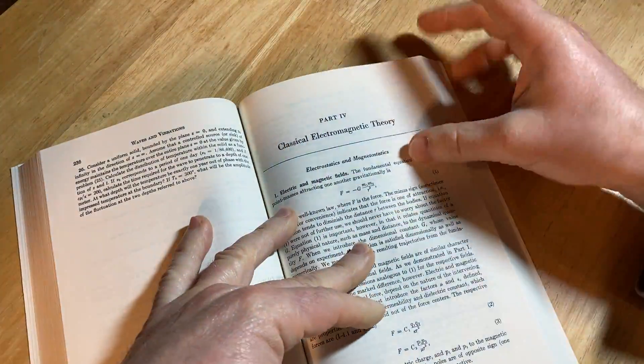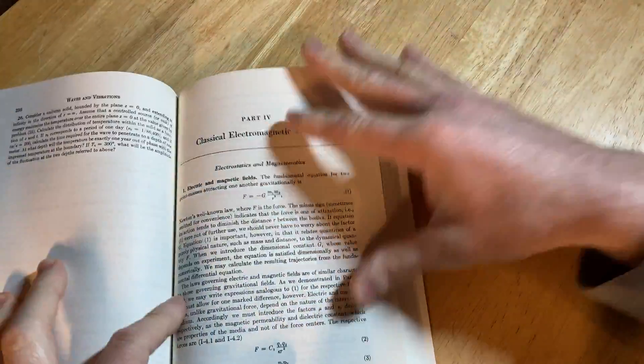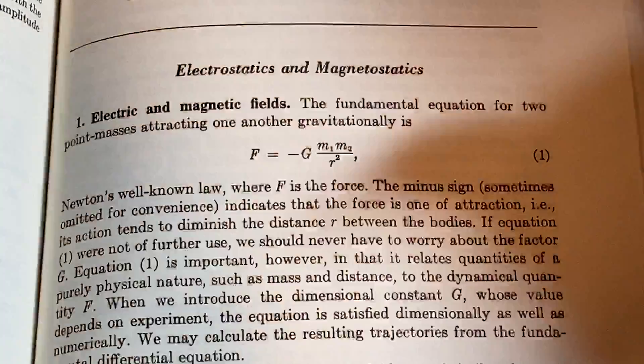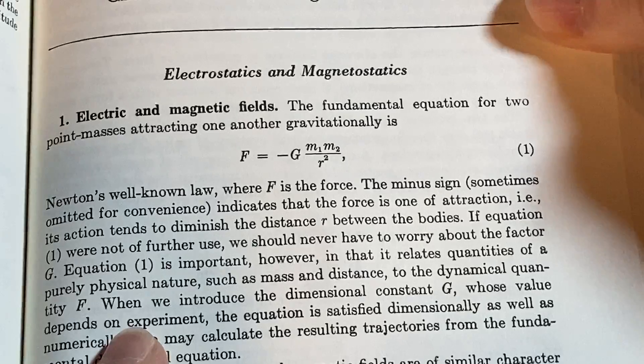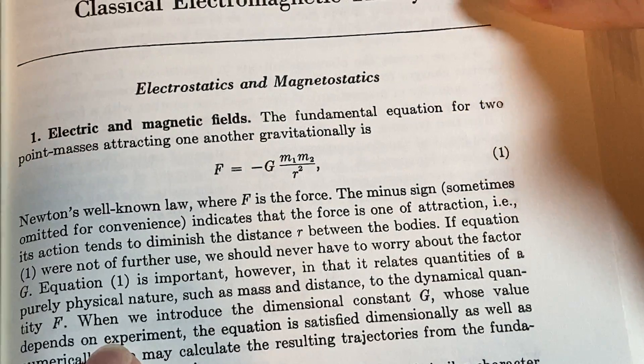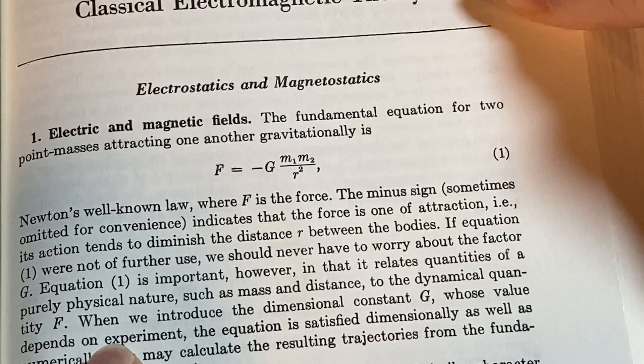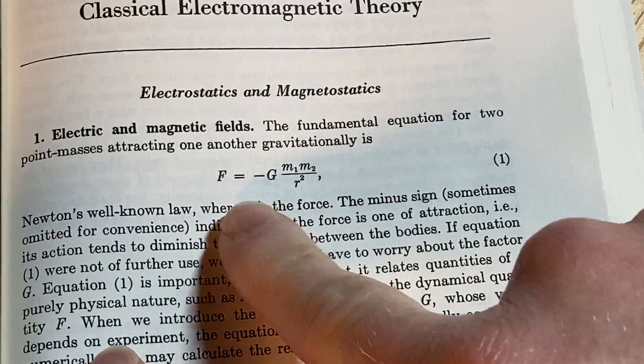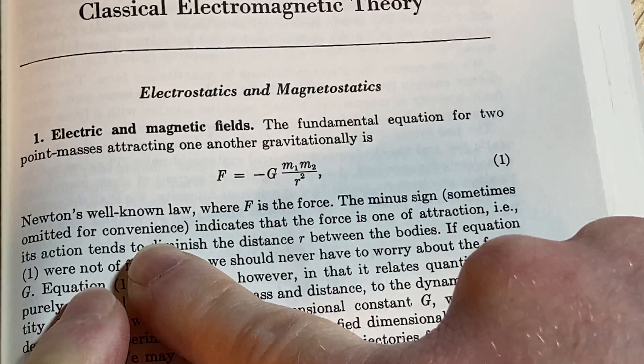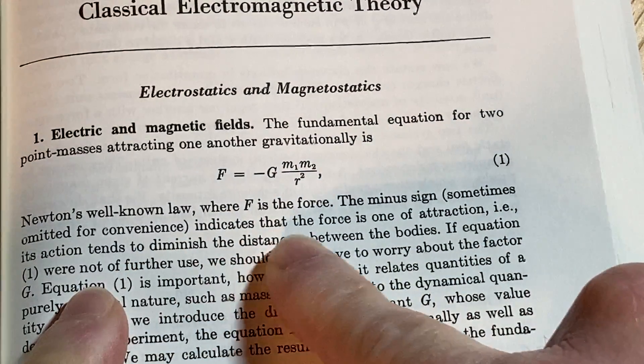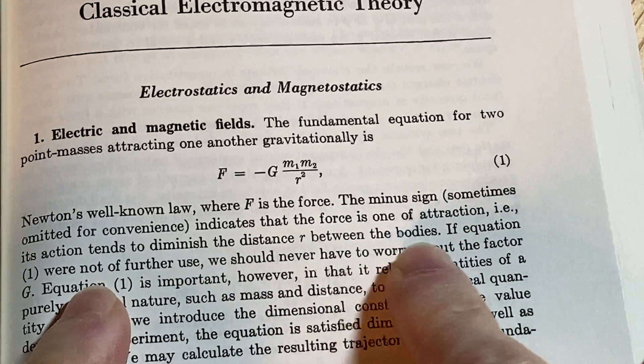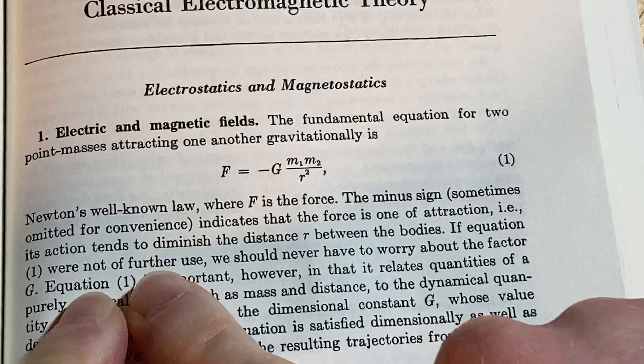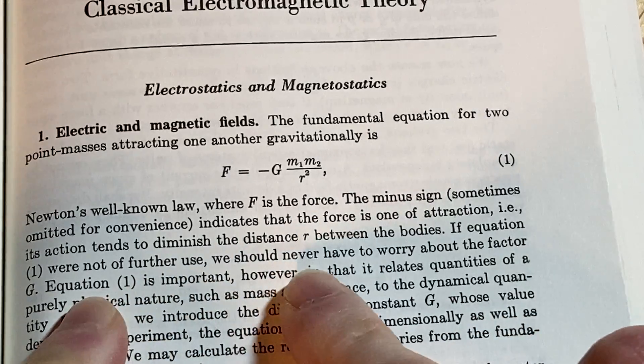Let's go back to, yeah, part four. Let's see what this says. Let's zoom in here and read this together. Electrostatics and magnetostatics. Electric and magnetic fields. The fundamental equation for two point masses attracting one another gravitationally is, and here we have this equation, Newton's well-known law where F is the force. The minus sign, sometimes omitted for convenience, indicates the force is one of attraction. Its action tends to diminish the distance r between the bodies. Cool.